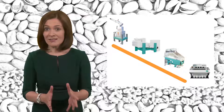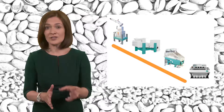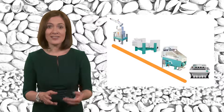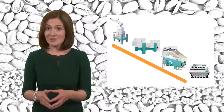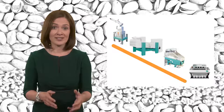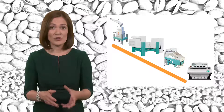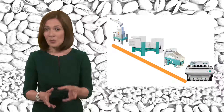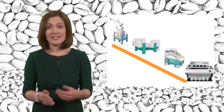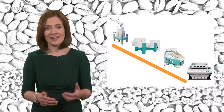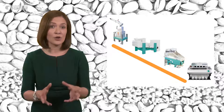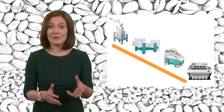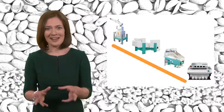It's also worth noting that there is no single machine for certain foreign body types either. For example a destoner is not the only machine which can remove stones — some stones can also be removed by separators, sieves and indeed optical sorting machines too. In fact a destoner itself will not be used to remove stones that are of a similar density to the good product, as this would result in an unprofitable loss of good product.